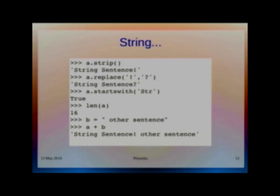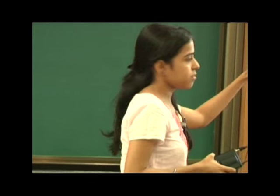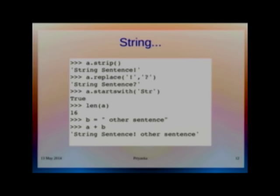Here I have passed whitespace as an argument, so it split the string. There are other methods like strip and replace. For example, here dot replace - what it has done is replaced exclamation marks with question marks. It always replaces the first argument with the second argument. Then dot startswith tells you in boolean if your string starts with some characters. Then len(a) tells you the length of your string. In C we have a terminal character, null character at the end. But in Python, it is not like that. There is no null character.